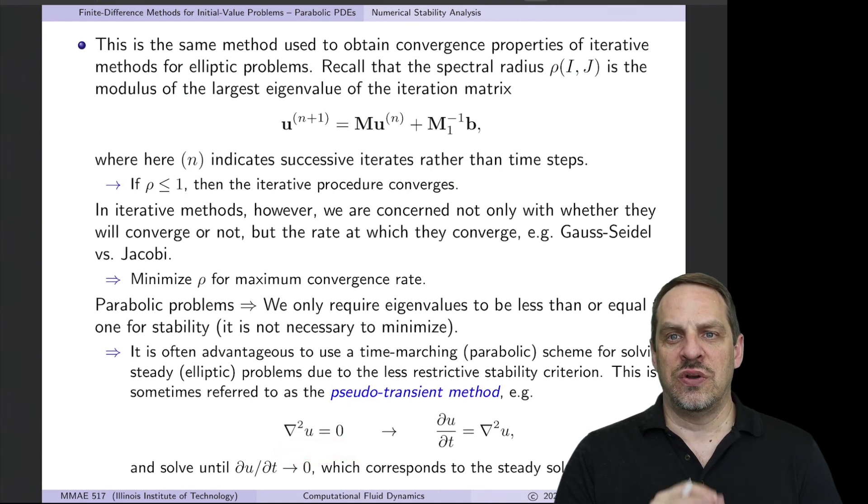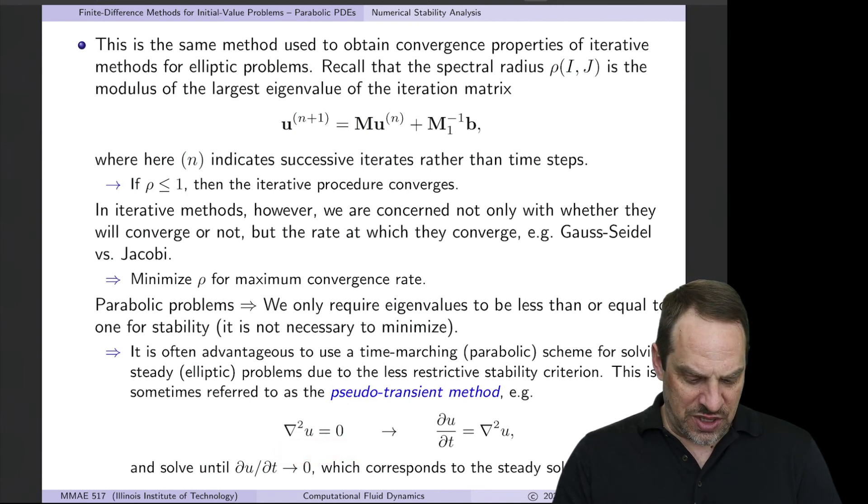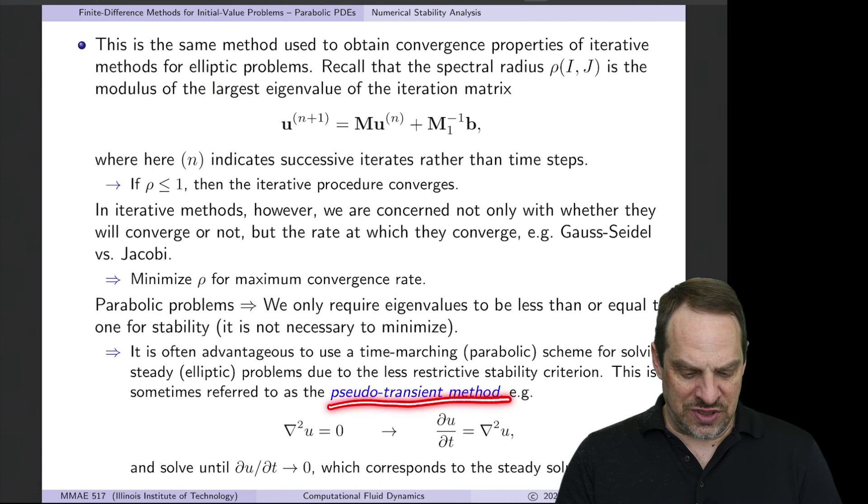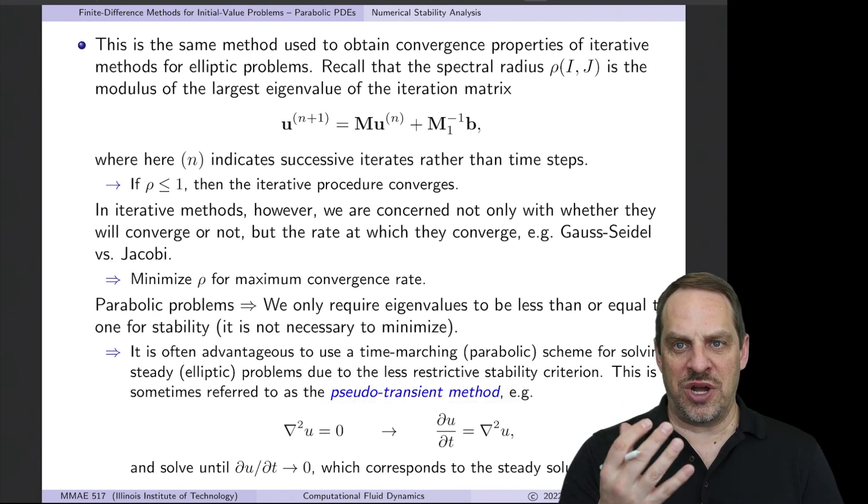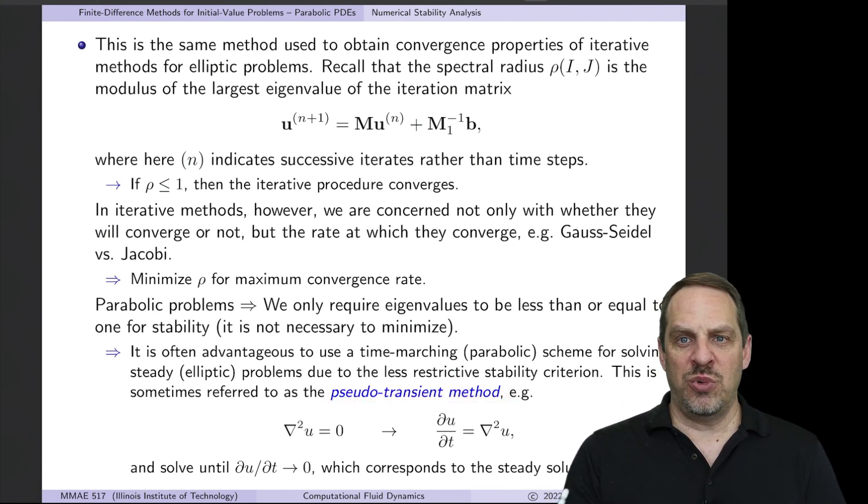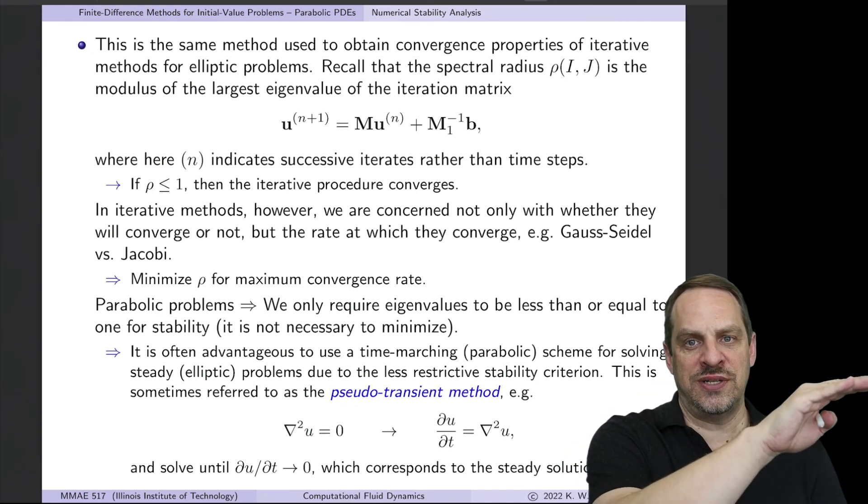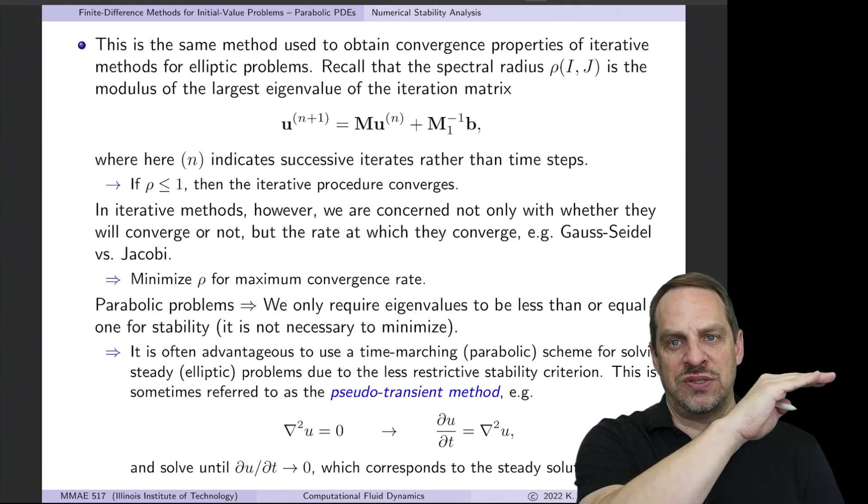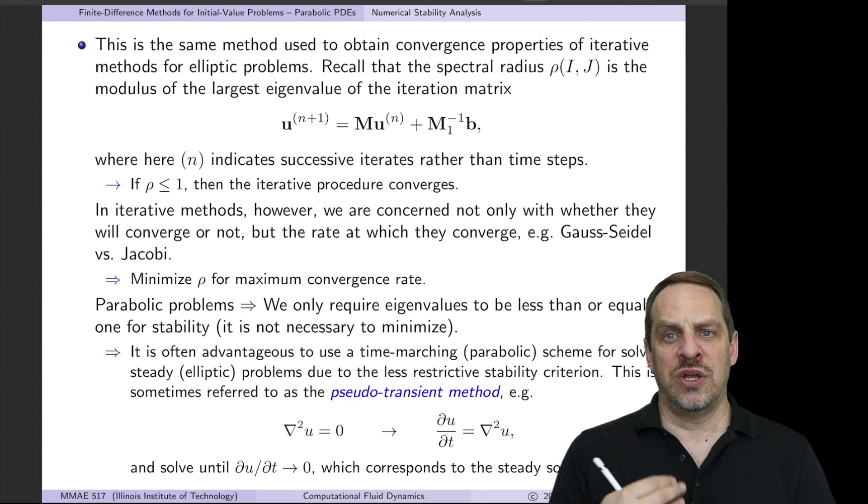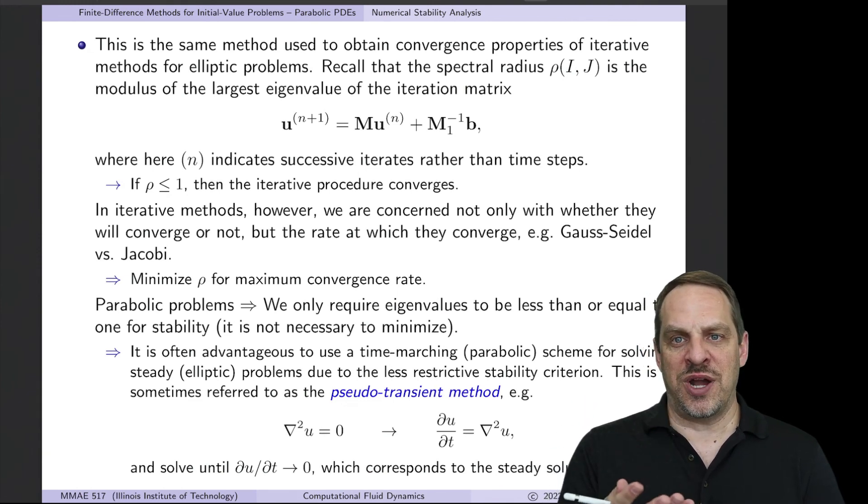This is called the pseudo-transient method, so we're going to make it a transient problem, we're going to make it an unsteady problem, but we actually don't care about how it approaches that steady state. We just want to do the calculation to get to that steady state. So you often see this done, people are solving steady, elliptic problems, you wonder why. Why are we making the problem more difficult? We're doing that because it actually may speed up the solution itself.